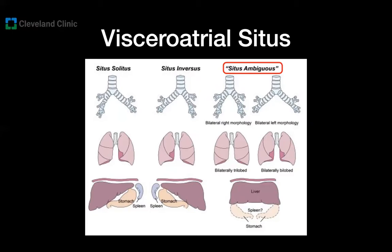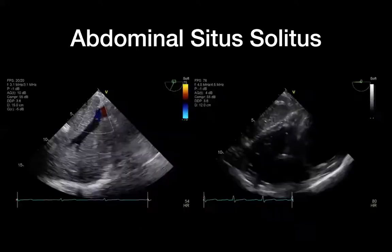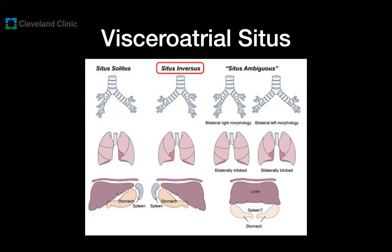This is also called heterotaxy syndromes. Van Praagh uses the terms asplenia and polysplenia to differentiate them, and others use the terms left or right isomerism.